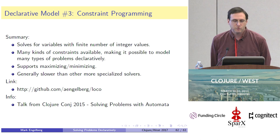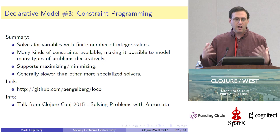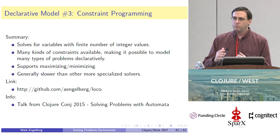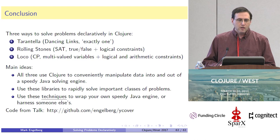That brings us to the end of declarative model number three: constraint programming. Constraint programming is great for variables with a finite number of integer values. It has many kinds of constraints available so you can represent a lot of different kinds of problems declaratively and use this solver. It supports optimization, but from the timing tests it's generally slower than the more specialized solvers when those apply.